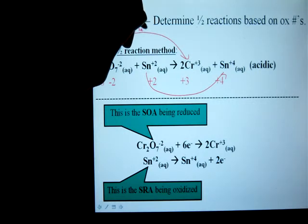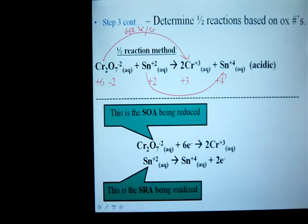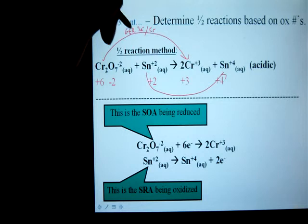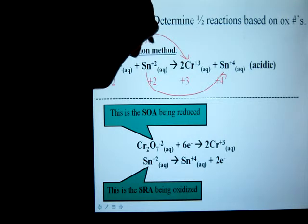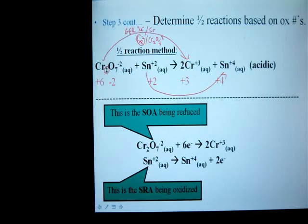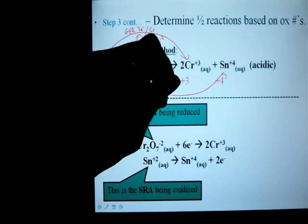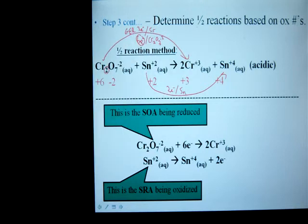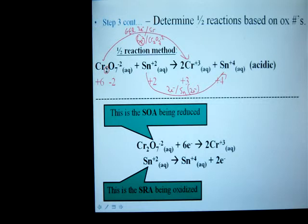Three electrons per chromium. Well, there are two chromiums involved, which means there must be a total gain of six electrons for the whole entire formula unit of Cr2O7. And that total number is the important number that you need to balance the whole reaction. For tin, there's only one of each, so it's a little simpler. Two electrons lost per tin. And then there is only one, so it's two electrons overall.